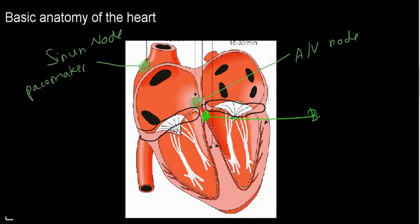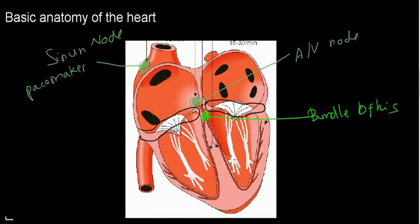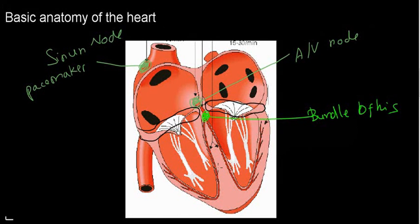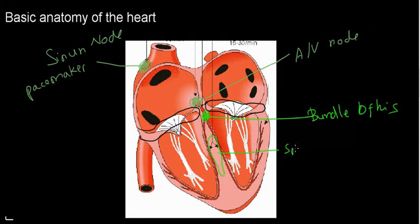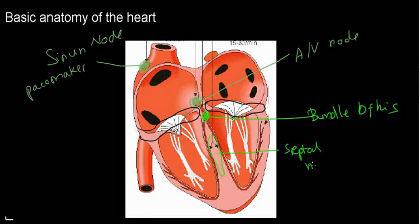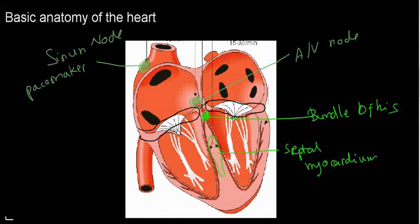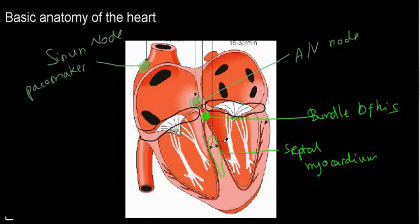Here we have the bundle of His. All you really need to know about the bundle of His and the different bundle branches — the left bundle branch and the right bundle branch — is that they conduct electricity really, really quickly. And this is the septal myocardium, just the tissue in between the two bundle branches. Then we have the two ventricles: the right ventricle and the left ventricle.